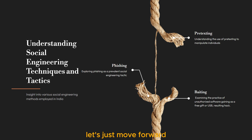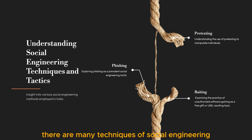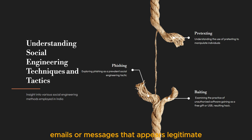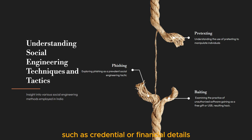So let's move forward to understand social engineering techniques and tactics. There are many techniques of social engineering, but three of the most common are covered here. One of the most common social engineering techniques is phishing, which involves sending fraudulent emails or messages that appear legitimate. These messages often contain malicious links or attachments designed to trick the recipient into revealing sensitive information such as credentials or financial details.